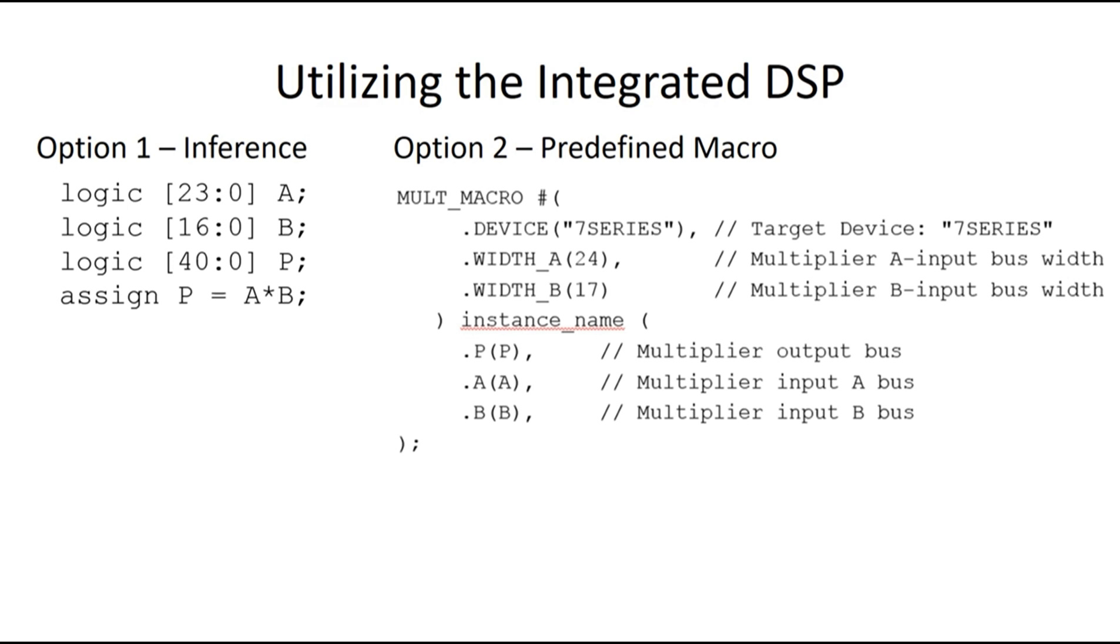Here we're showing an example where we specified that we want one of the inputs to be 24 bits wide and the second input to be 17 bits wide. We're feeding those two inputs in as inputs A and B and then the output comes out on the product or P line.